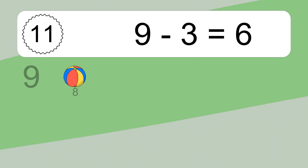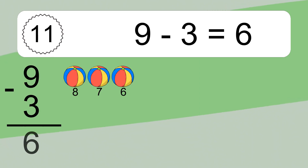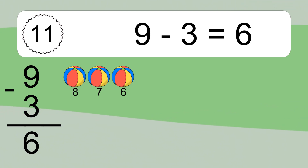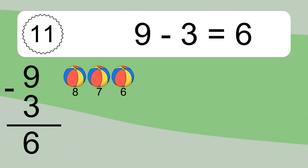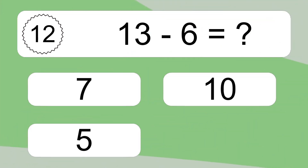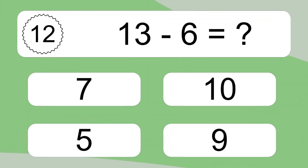9 minus 3 equals what? 9 minus 3 equals 6. Let's count it: 8, 7, 6.